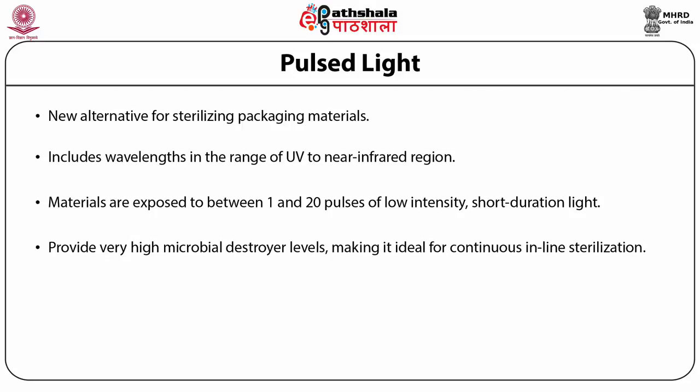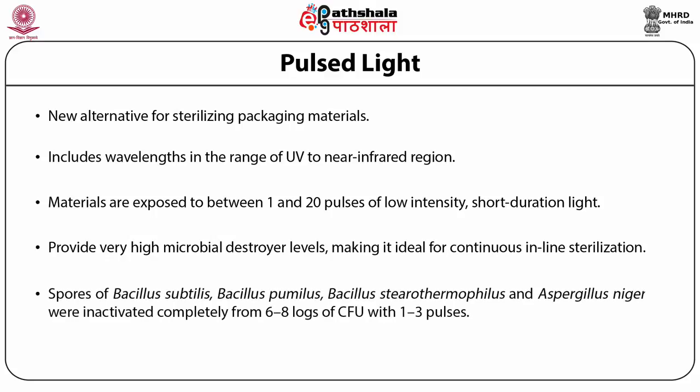More than 7 log cycles of Aspergillus niger spore inactivation result with just a few pulsed light flashes. A variety of microorganisms including Bacillus subtilis are inactivated by using between 1 and 35 pulses of light with intensity ranging between about 1 and 12 joules per centimeter squared. Spores of Bacillus subtilis, Bacillus pulvulus, Bacillus stearothermophilus, and Aspergillus niger are inactivated completely from 6 to 8 logs of colony forming units (CFU) with 1 to 3 pulses.